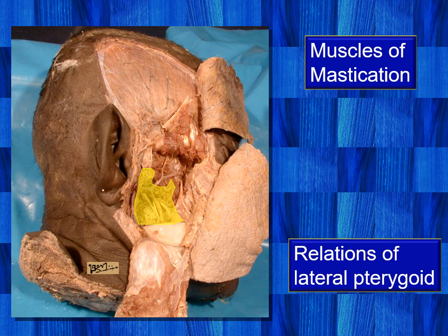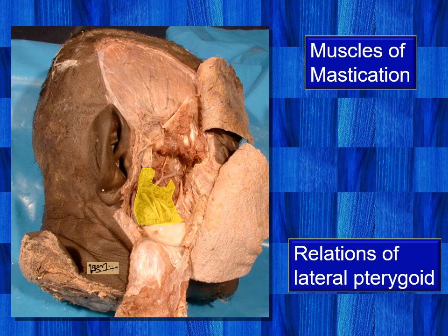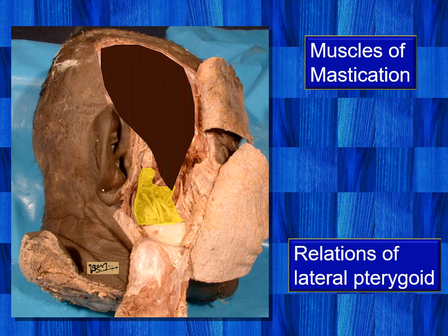The ramus of the mandible was removed; now we have digitally put it back in place to enable the attachments of the temporalis muscle to be demonstrated. That flashing muscle is the temporalis muscle. It inserts into the coronoid process of the mandible.